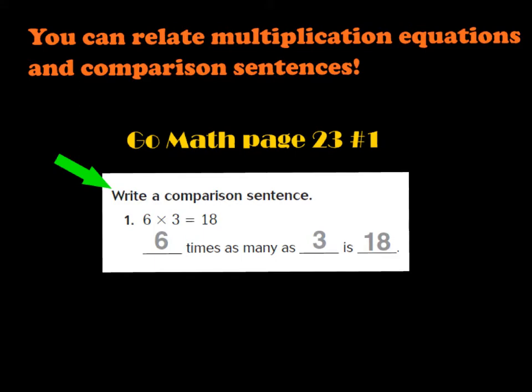Let's look at number one in your GoMath book. It says that you're going to write a comparison sentence. You can relate multiplication equations and comparison sentences. So what that means is I can have an equation for multiplication that looks like this: six times three equals 18. And I can write that in a sentence: six times as many as three is 18.